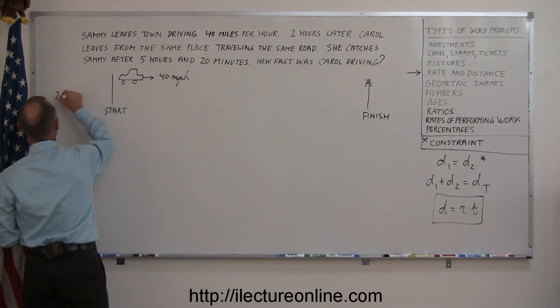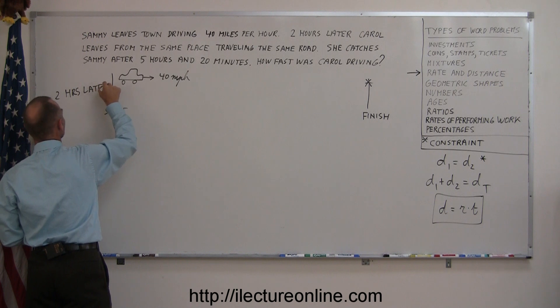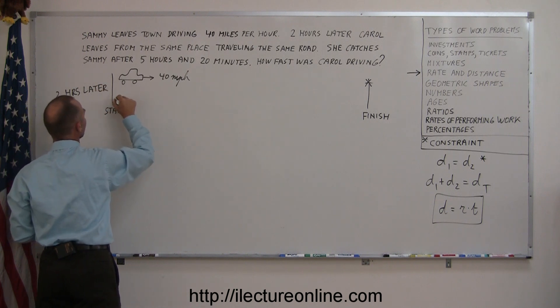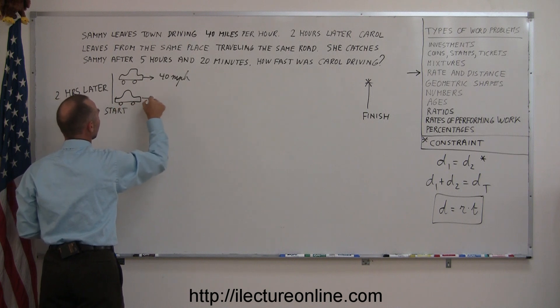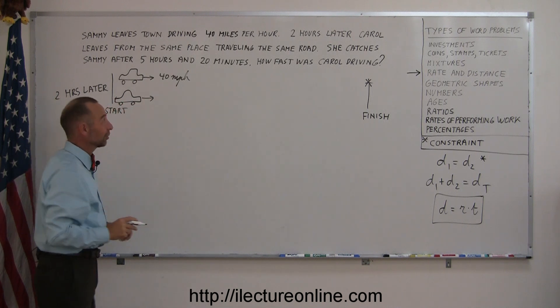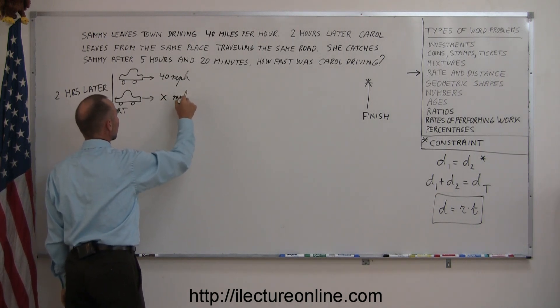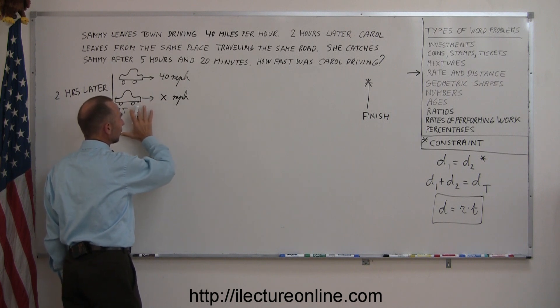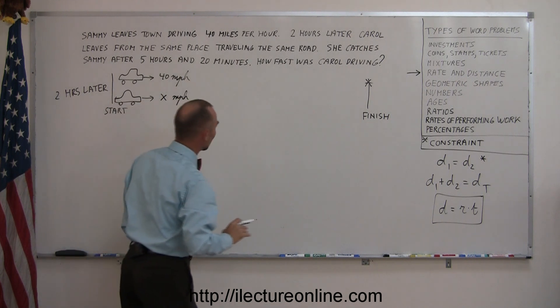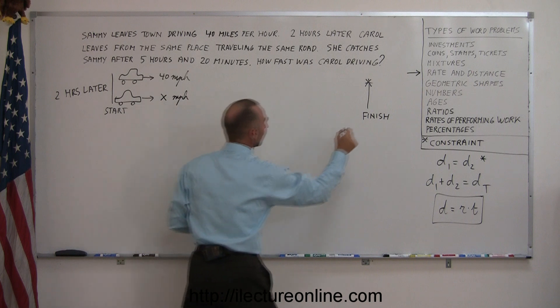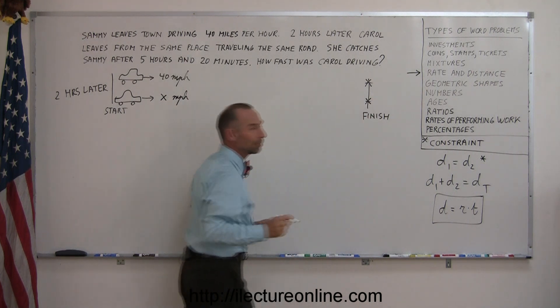So two hours later, Carol takes off in her car. She drives faster, obviously, otherwise she couldn't catch Sammy. But we don't know how fast. So let X represent the speed at which Carol travels. And after a total of 5 hours and 20 minutes after Sammy left, Carol also arrives at the same spot.